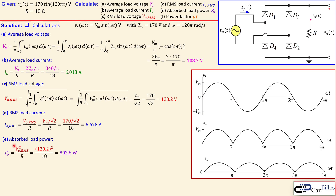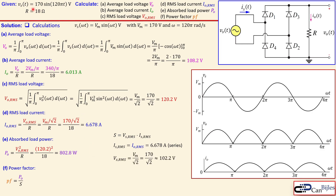The absorbed power is the RMS load voltage squared over R, or equivalently the RMS load current squared times R — both give 802.8 W. The power factor is defined as the true dissipated power over the apparent power. The apparent power is the RMS source voltage times the RMS source current. Since load and source currents are in series they are equal, and the RMS source voltage is 170 / √2 ≈ 120.2 V, giving apparent power ≈ 802.8 VA. Therefore the power factor is 1, which is ideal.